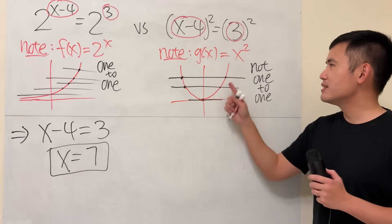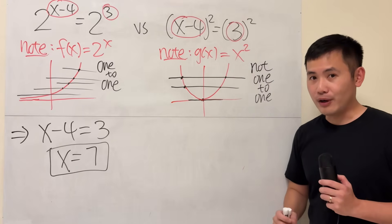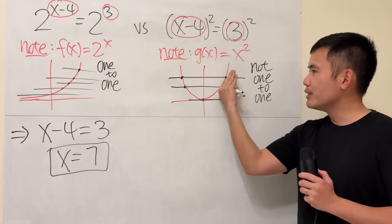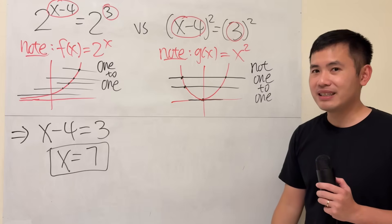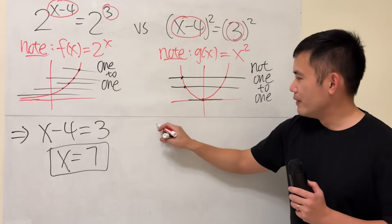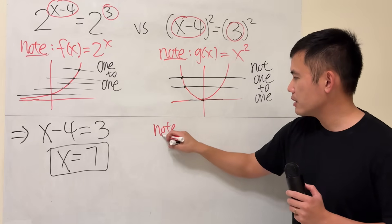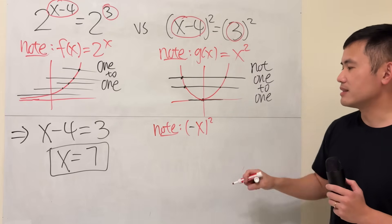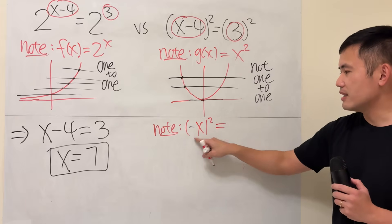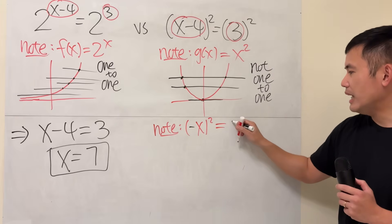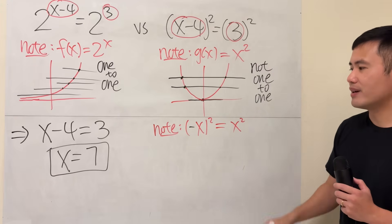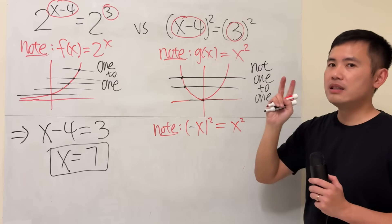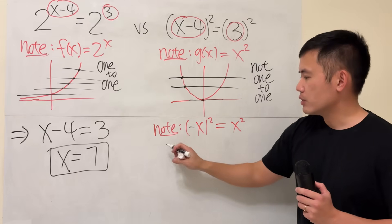For this case here, notice that x squared is an even function, meaning that if you look at the graph, whatever you have on the right-hand side, you have the same thing on the left-hand side. So, I will just say, note, if you have negative x squared, like this, negative x and then square, this is the same as x and then square. It's an even function. So, you will have to consider two possibilities. Two cases, technically.